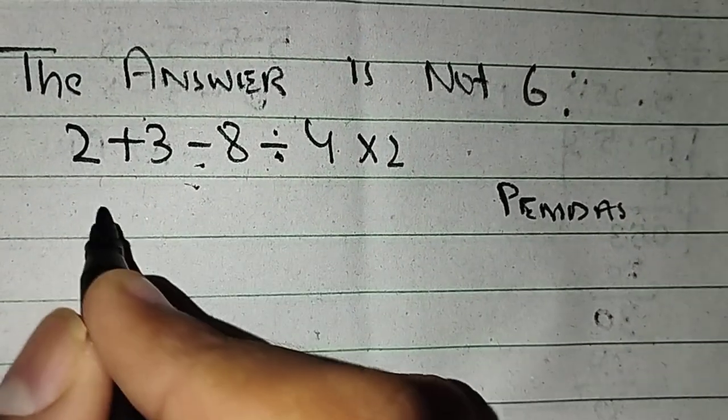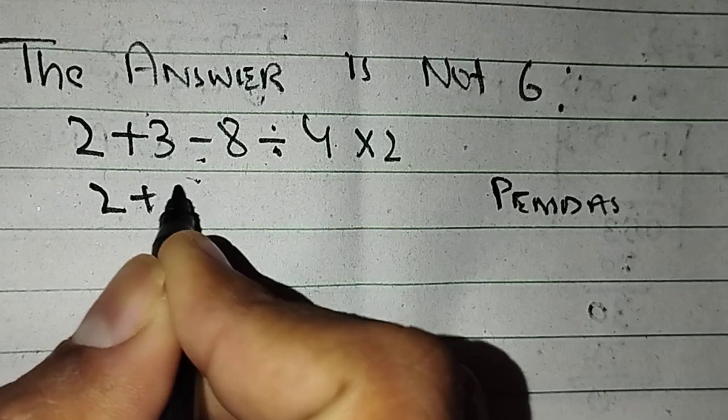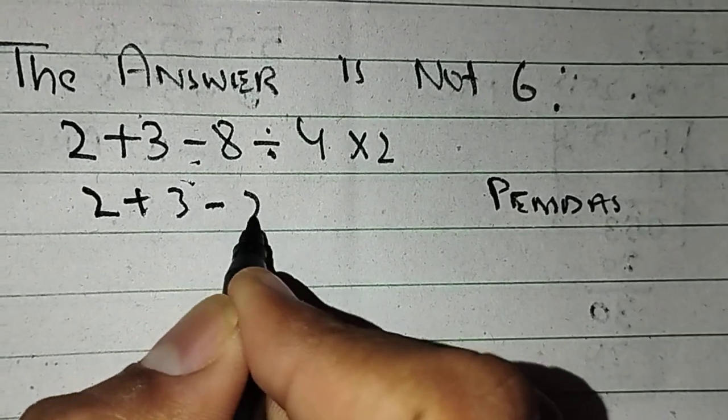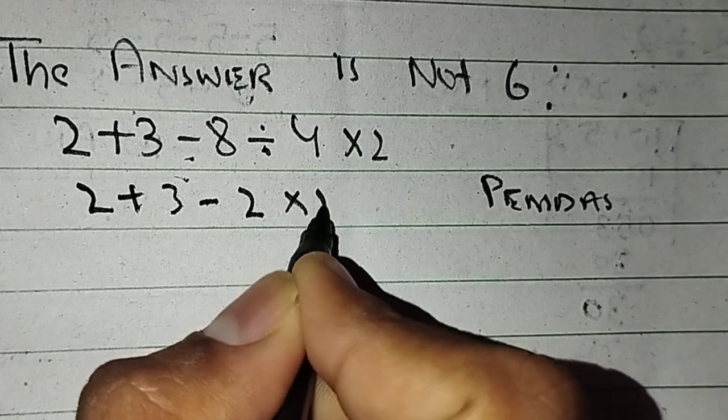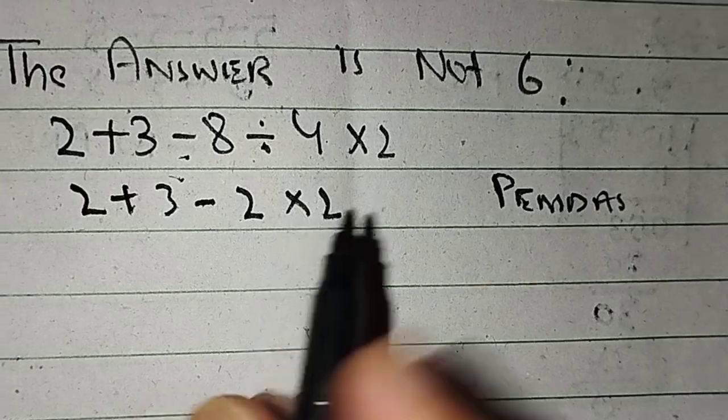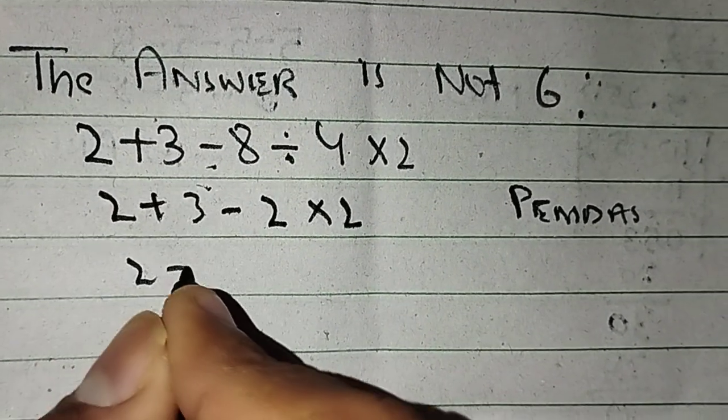When we solve the division, 2 plus 3 stays the same, and minus also stays the same. Here we divide 8 by 4, which equals 2, and multiply by 2. Now we solve the multiplication: 2 plus 3 minus 4.